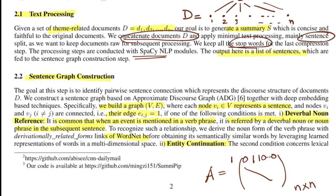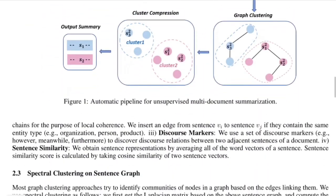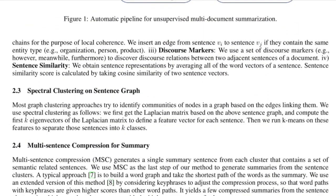The second condition is entity continuation: an edge is inserted between vertex vi and vj if they contain the same type of entity, for example organization, person, or product. You run an entity recognizer first and join two sentences if the same type of entity repeats. The third condition is discourse markers, where the authors use handcrafted discourse markers such as 'however,' 'meanwhile,' and 'furthermore' as keywords to identify discourse relations between two adjacent sentences in any document.